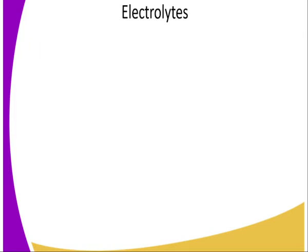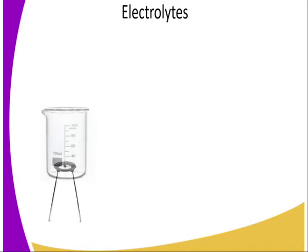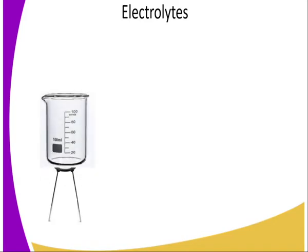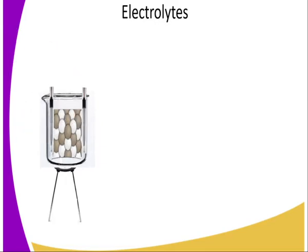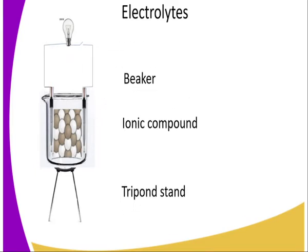So what are electrolytes? For us to understand this, it is very important to look at the following illustration. We have a tripod stand containing a beaker which holds an ionic substance. When we connect this ionic substance in solid state through electrodes, and the electrodes are connected to an external circuit and the switch is closed, you may observe that the bulb does not light. This is because there is no flow of electrons, since ionic compounds have a complete transfer of valency electrons from one atom to the other, leaving no free electrons at all.